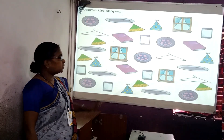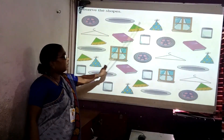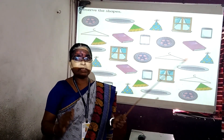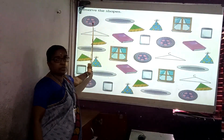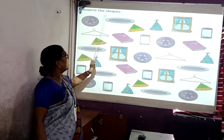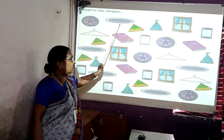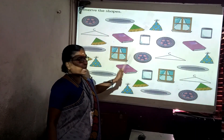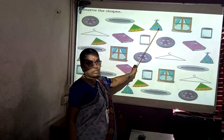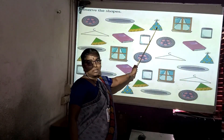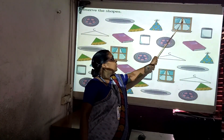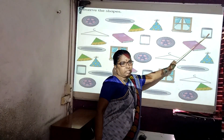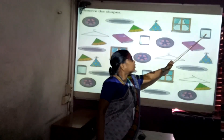Now let us see the textbook. Observe the shapes given. Here many objects are given. These objects are made of shapes. Let us see what shapes they are. This is your wheel — the shape of the wheel is round. This is a plate — the shape of the plate is round. And the cap — it is a triangle. The shape of the cap is triangle. And this is a clown's cap; the clown uses this cap, so it is triangle shape. And this is the window — it looks like a rectangle, a four-sided figure. And your mobile has a rectangle shape.